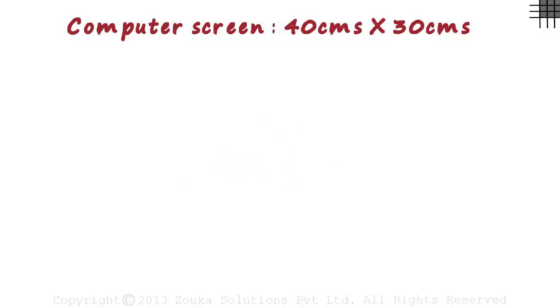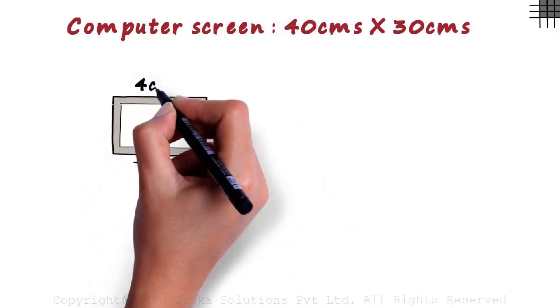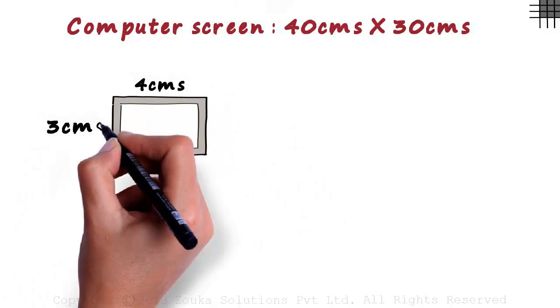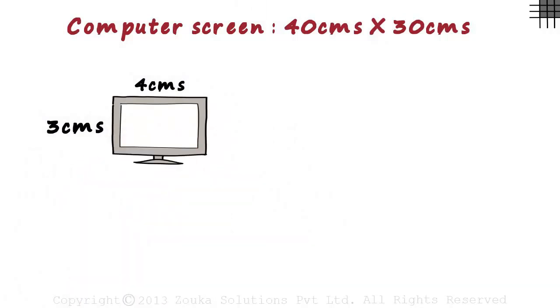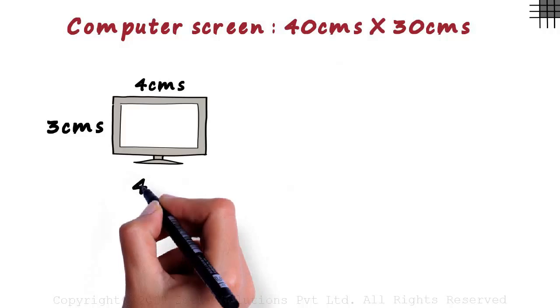It means you draw a smaller figure which is similar to the earlier one. You may draw a small screen like this, with length 4 centimeters and width 3 centimeters. This will fit into your notebook. Here the ratio of the length to the breadth is 4 is to 3.